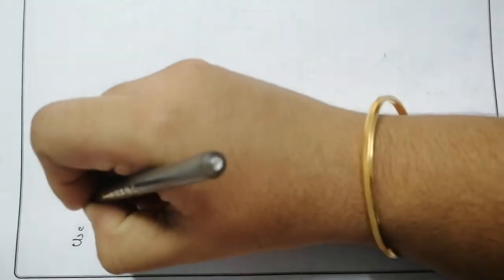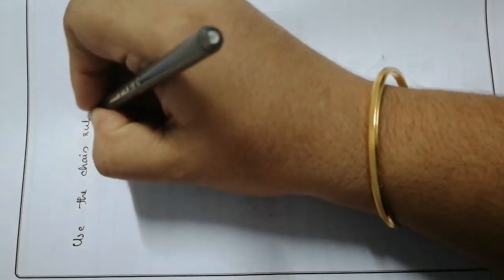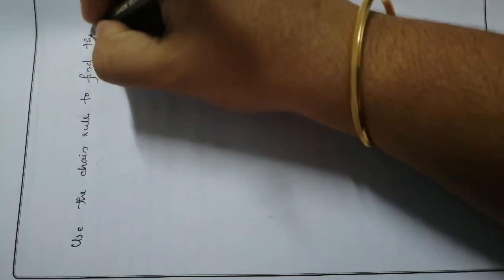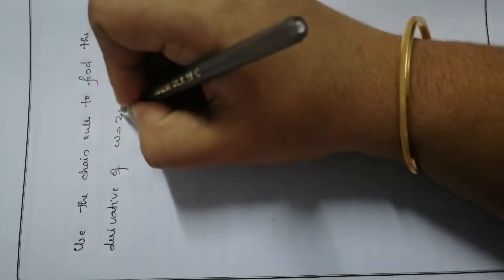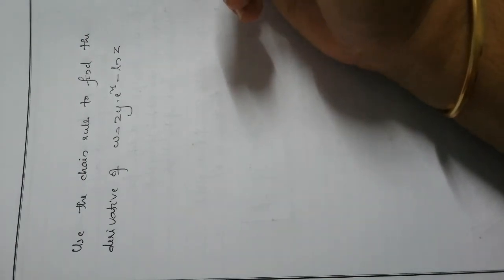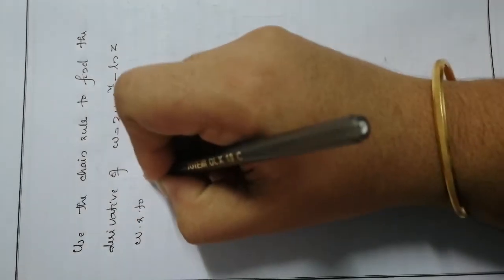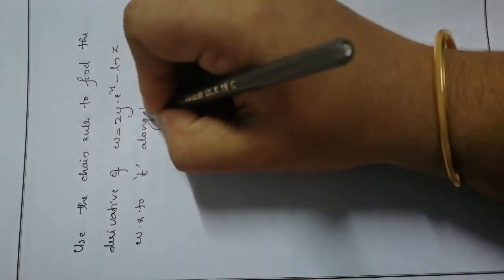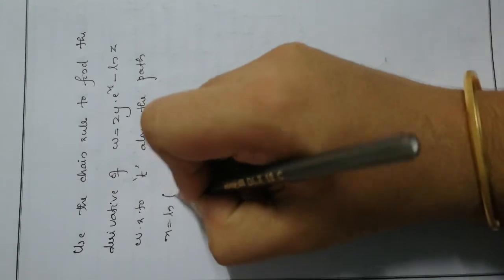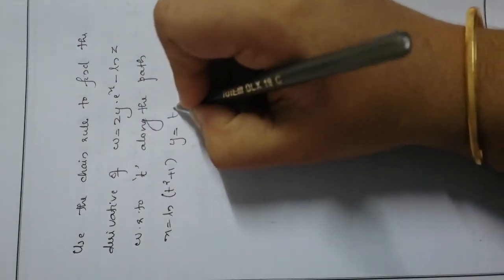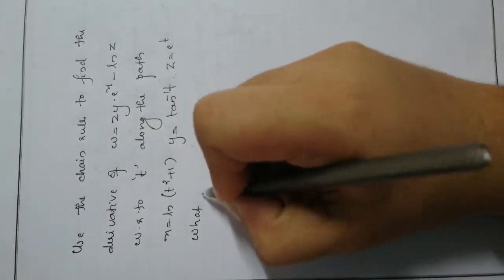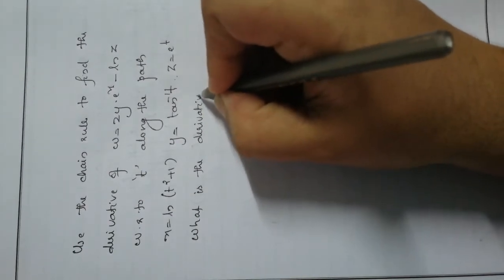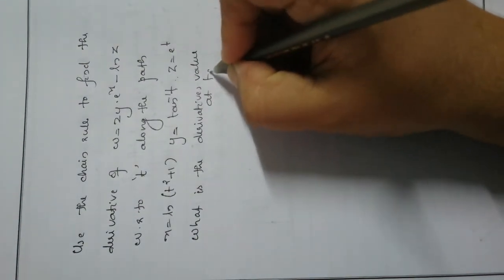First question: Use the chain rule to find the derivative of w = 2y·e^x − ln(z) with respect to t, along the path x = ln(t² + 1), y = tan⁻¹(t), and z = e^t. What is the derivative's value at t = 1?